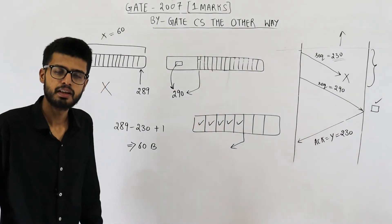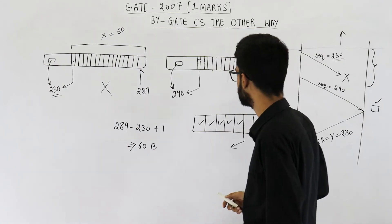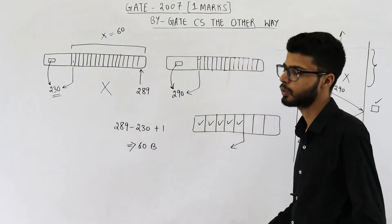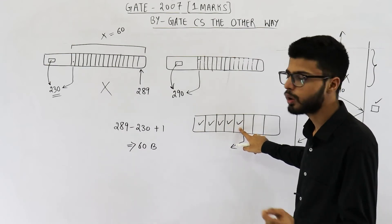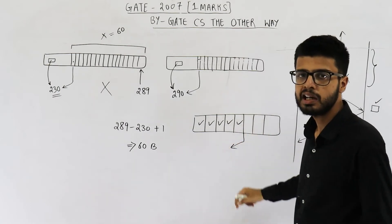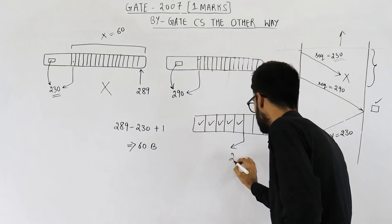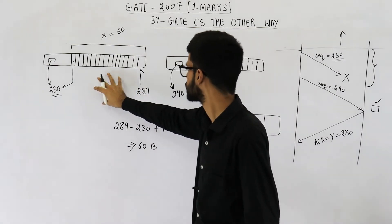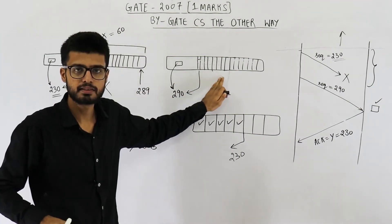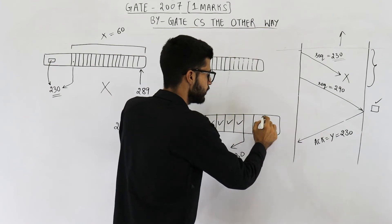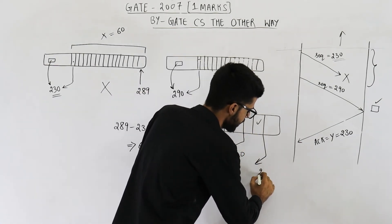Suppose this is the receiver buffer, and also suppose that before sending these two segments the sender had already sent five segments. The question says all of the data till now is acknowledged, meaning all those five segments are received as well as acknowledged. Now what will be the acknowledgement number sent for this segment? It will be the byte that the receiver is expecting, which is 230. The sender then sends the first segment (seq 230) and the second segment (seq 290). The first one is lost in transit but 290 is received. After receiving 290, the acknowledgement number sent will again be 230 only.